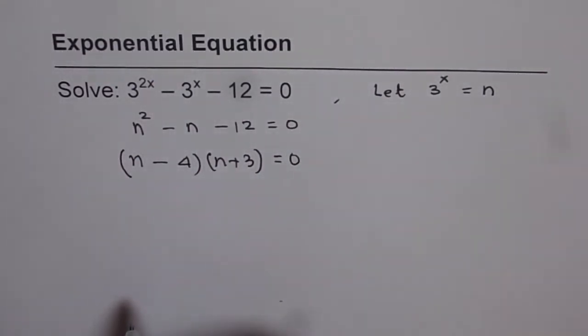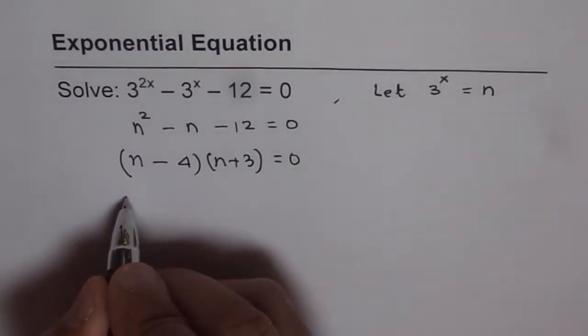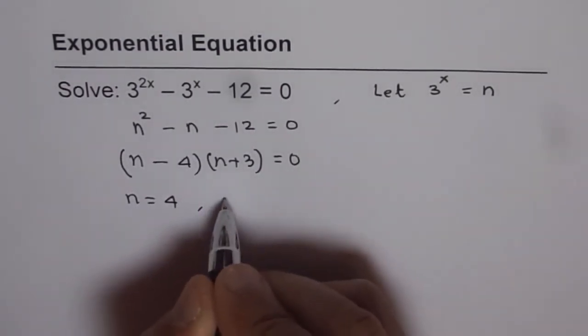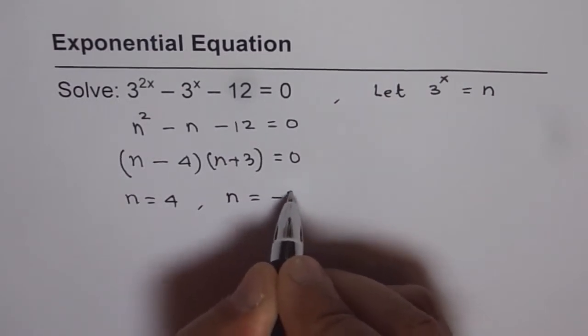That gives us two solutions: n equals 4 and n equals negative 3.